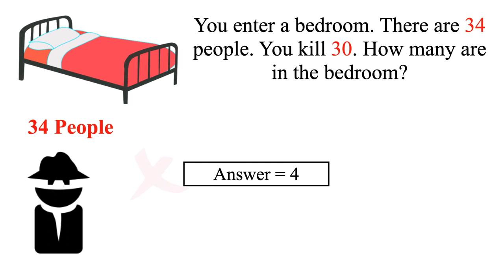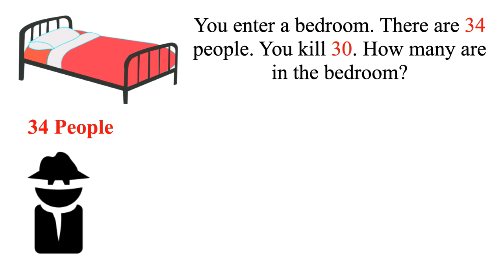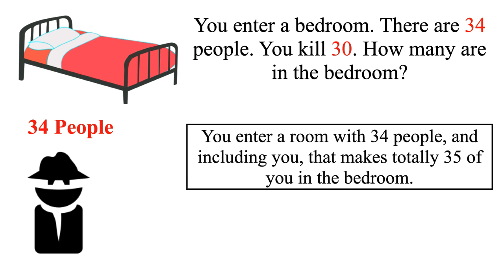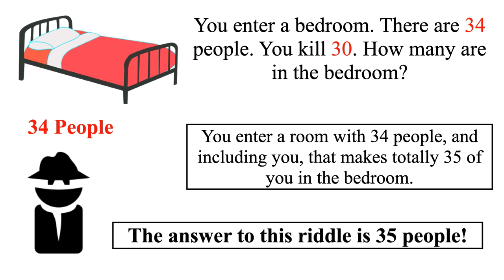Wait, this is still not the correct answer. The correct answer is 35 people. You enter a room with 34 people, and including you that makes 35 in the bedroom. The question asks how many people are in the bedroom — not how many people who are alive. This is the most important way of analyzing this riddle, which is why many have come up with four or five instead. Forget about how many people are killed — the answer is the total number of people who are in the room. Thus the correct answer is 35.